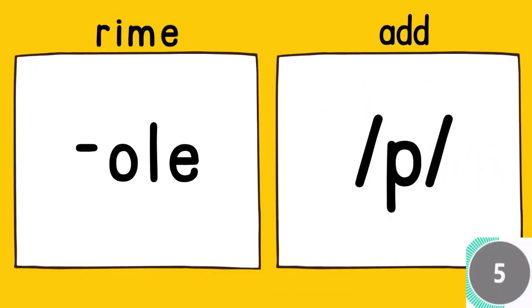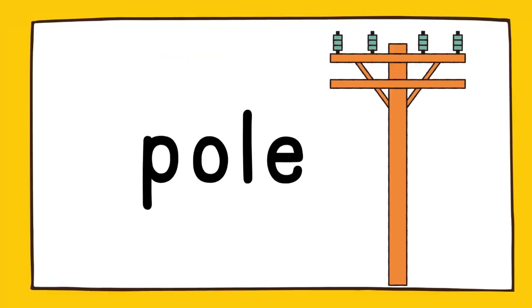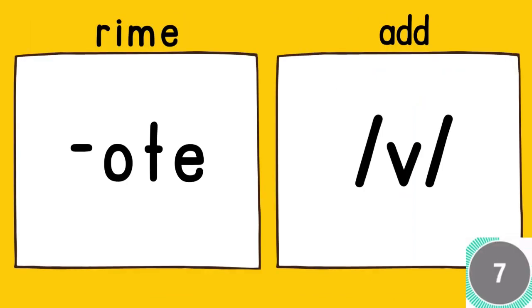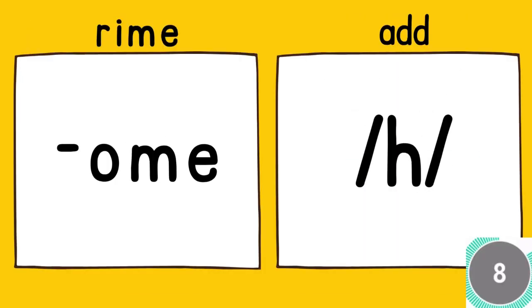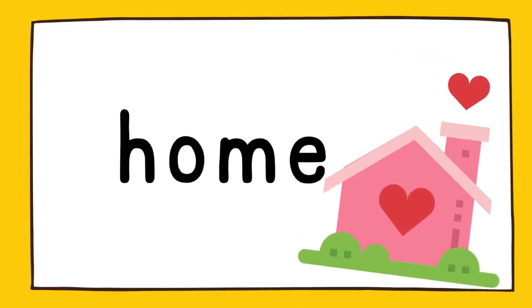The rhyme is old, add p. Pole. The rhyme is oat, add z. Vote. The rhyme is om, add h. Home.